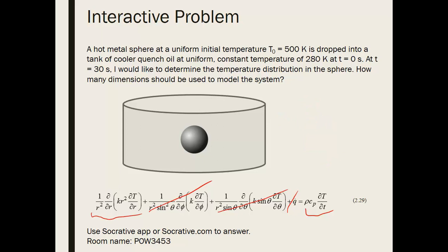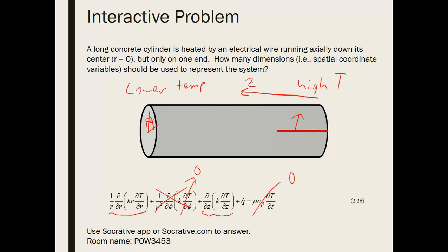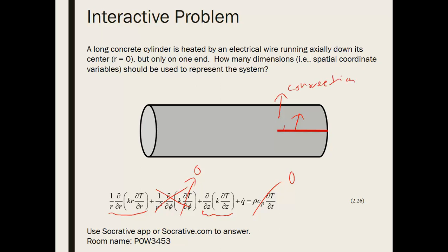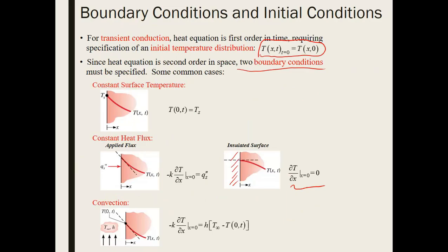It takes practice solving these problems. For the concrete cylinder with two spatial dimensions, four boundary conditions are needed — two per dimension. Radially: a convection boundary at the outer surface and a no-flux condition at the center. Axially: convection at one end and a no-flux condition at the insulated end. With two dimensions, two boundary conditions are required for each dimension.